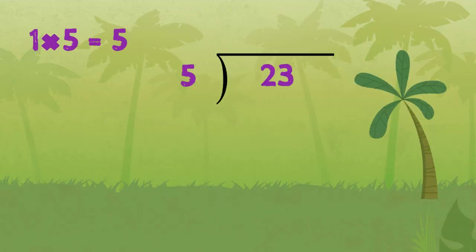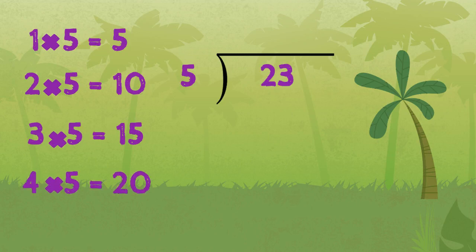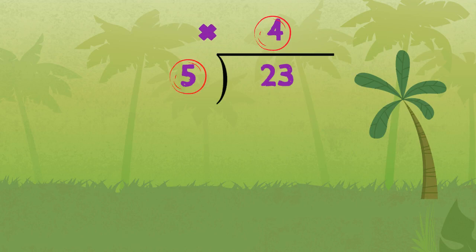1 five is 5 — too small. 2 fives is 10 — still small. 3 fives is 15 — still small. 4 fives is 20 — that looks very close to 23. And 5 fives is 25 — that's too big. So 20 is our closest answer, making 4 the right number to pick. We put 4 on top, then multiply 4 by the divisor 5 to get 20, which we write right below 23.